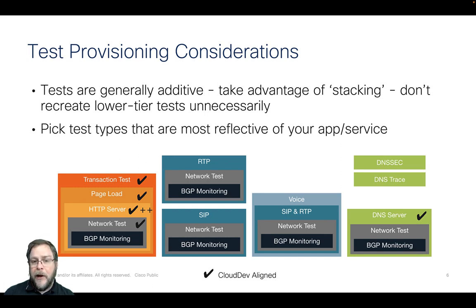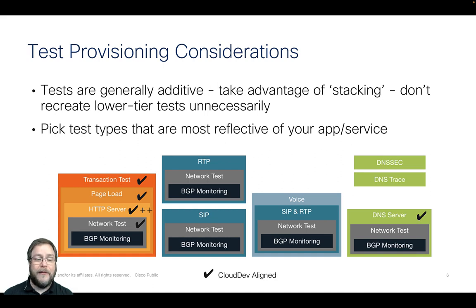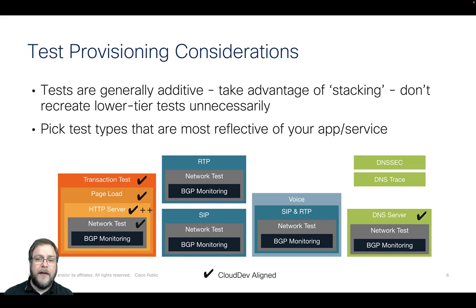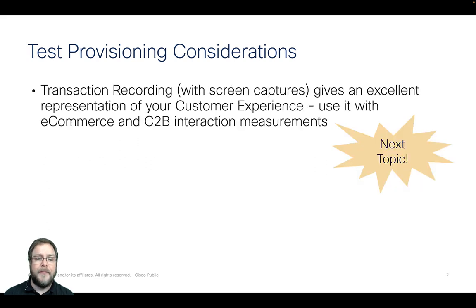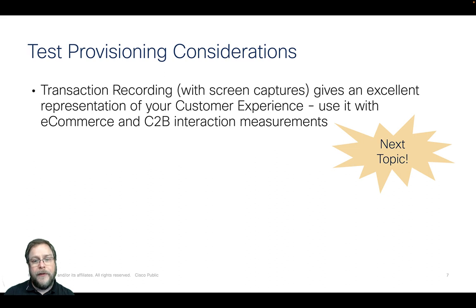You can remove the BGP monitoring test under advanced settings if you feel it's polluting your user experience data and you're not using that information. Pick the types of tests most reflective of your app and service — if you're doing collaborative voice or video streaming, use the voice and SIP RTP-type tests. In the next topic, we'll show transaction recorders and how they can do screen captures to give a representation of customer experience for e-commerce or consumer-to-business interactions.